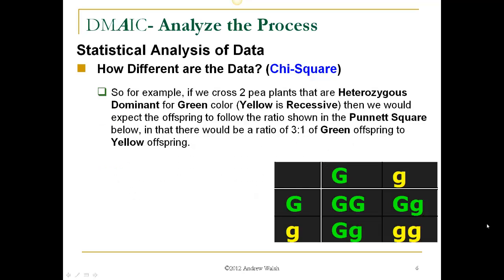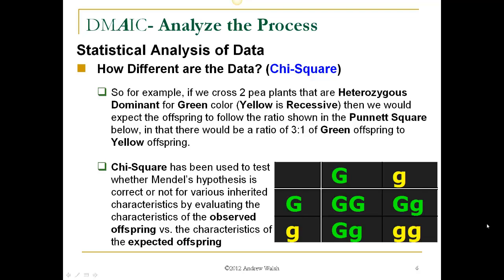For example, if we cross two pea plants that are heterozygous dominant for green color — yellow would be recessive — then we would expect the offspring to follow the ratio shown in the Punnett square, with a ratio of 3 to 1 of green offspring to yellow offspring. The Chi-Square test has been used to test whether Mendel's hypothesis is correct for various inherited characteristics by evaluating the observed offspring versus the expected offspring. Sometimes it's good, sometimes it's not.